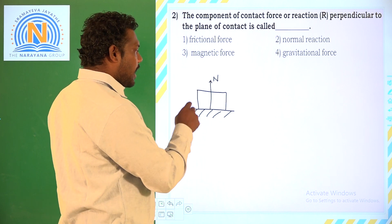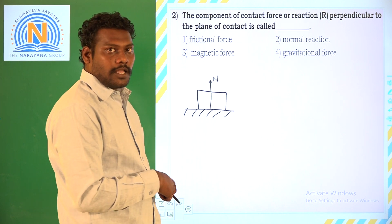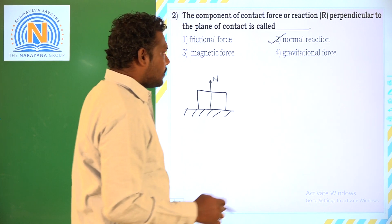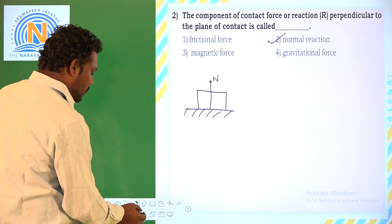Because it is perpendicular, the reaction perpendicular we will call it as normal. So the reaction is called as normal reaction. Let us get into the third question.